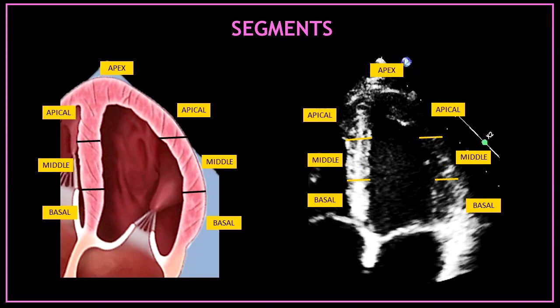The inferior septum and the lateral wall are divided into segments. The top segment corresponds to the left ventricular apex, or apical segments. Lower down you can find the middle segments, and closer to the valve you can visualize the basal segments of these two walls.